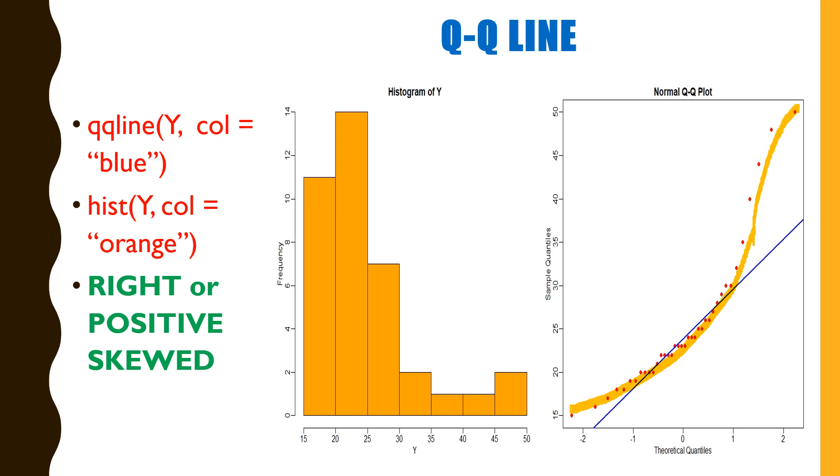We have drawn Q-Q line with qqline Y and the color is blue. Also we have drawn a histogram, color is orange. And we can observe the histogram. It's opposite to the previous histogram. Lower values are more frequent in the histogram.